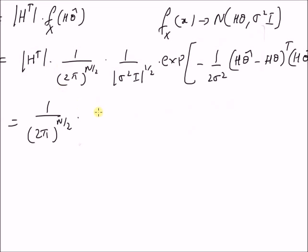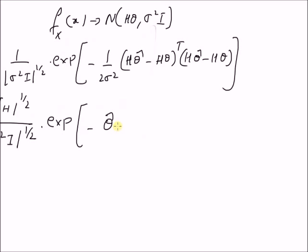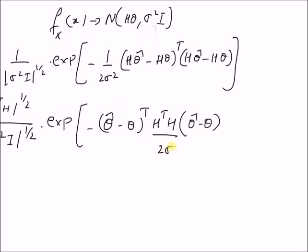This can be written as 1 over (2 pi)^(n/2). The determinant of H transpose can be written as the determinant of H transpose H to the power 1/2, since the determinant of H and H transpose are equal — we take the square root of the determinant of H or H transpose. Using that relation, we get this term and then sigma squared times I to the power 1/2, and the exponential of minus (theta hat minus theta) transpose H transpose H (theta hat minus theta), by taking H common in both factors, divided by 2 sigma squared.